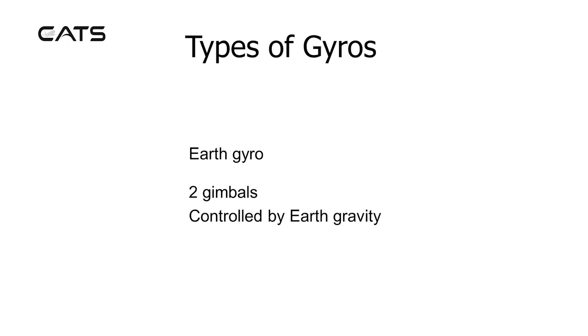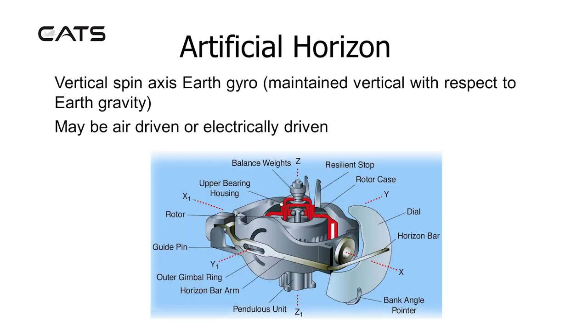Types of gyros: The Earth Gyro. This has two gimbals and is controlled by earth gravity. The artificial horizon is a vertical spin axis earth gyro maintained vertical with respect to earth gravity. It may be air driven or electrically driven.